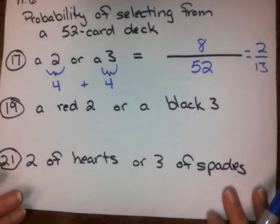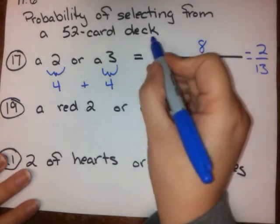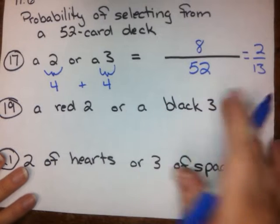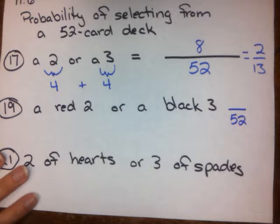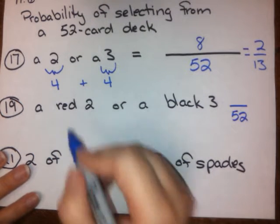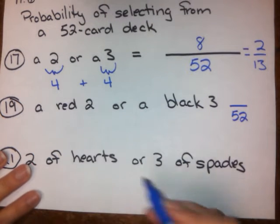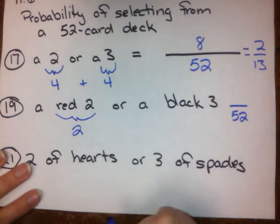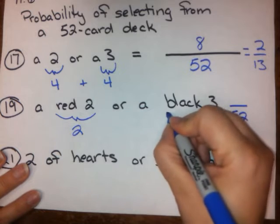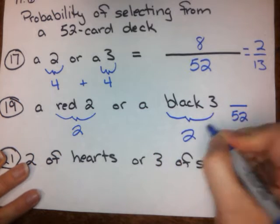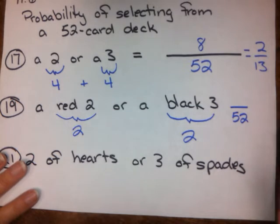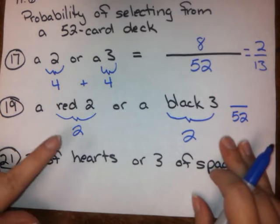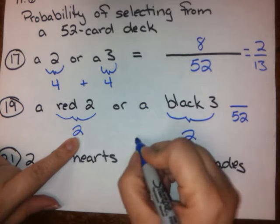So let's try the next one. We know again we're dealing with the entire deck of cards, we're not eliminating anything from the deck. So we know this is going to be over 52. How many red 2s are there in the deck of cards? Well, there are two red 2s: the 2 of hearts and the 2 of diamonds. How many black 3s are there? Two black 3s: the 3 of clubs and the 3 of spades. So you have two red 2s, two black 3s.